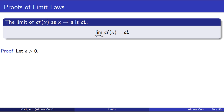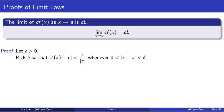First we let epsilon be greater than zero. Then we have to find a delta that will work in the definition of limit. We're going to pick delta so that the absolute value of f of x minus l is less than epsilon divided by the absolute value of c, whenever zero is less than x minus a is less than delta. We can do this because for every positive number, we can find a delta so that if x minus a is less than delta, then f minus l is less than that positive number. Epsilon is positive, the absolute value of c is positive, so epsilon over the absolute value of c is a positive number, which means we can find such a delta. And so we pick that delta.